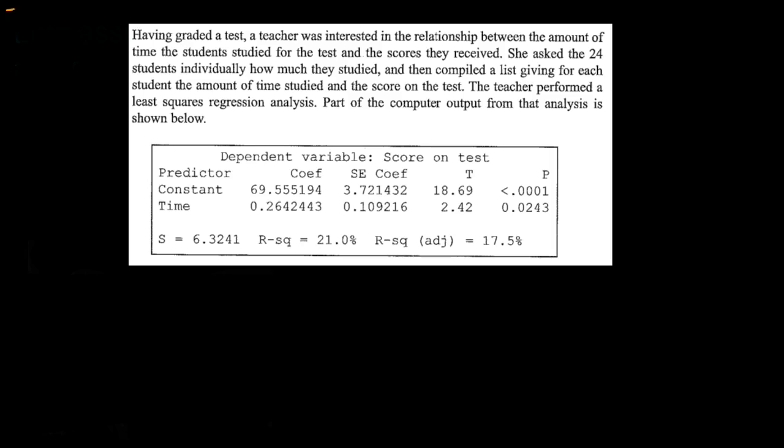So let's make sure to remember what these computer output tables show us first. The word constant is always the y-intercept. Directly underneath that is the slope, so 69.55 is the y-intercept. Directly underneath that is the slope. And when you also look here, the word right here underneath the word constant is your x variable. So basically we're trying to see, does the time it takes you to take a test directly change your test score? Is there a connection? Is there a relationship?